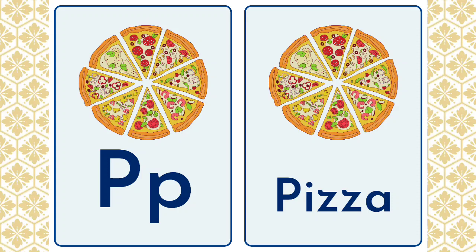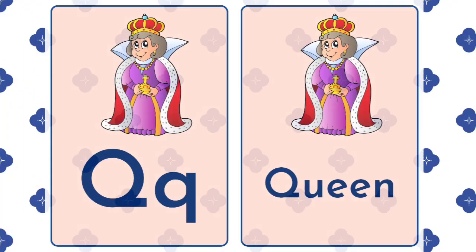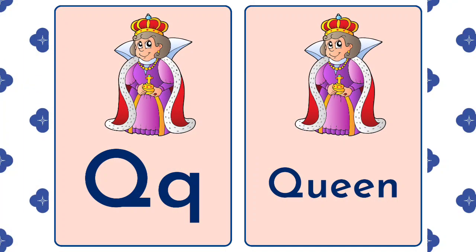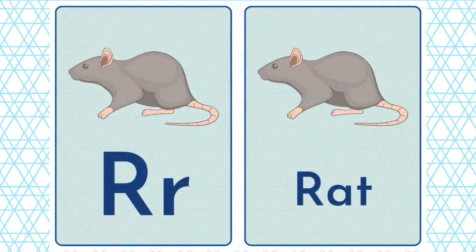P is for Pizza. Papa. Pizza. Q is for Queen. Q, Q. Queen.